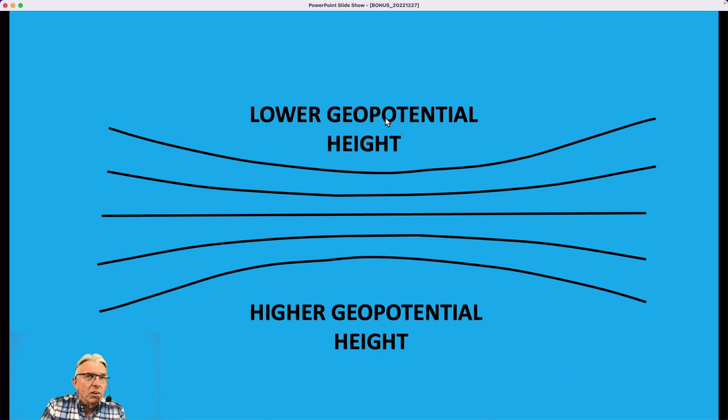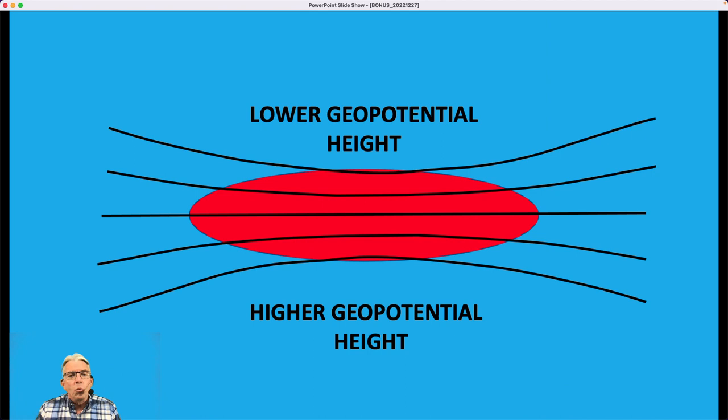So, because you don't have to go up as high up here to reach a given pressure, these are lower geopotential heights. And down here, you have to go up higher, and so it's higher geopotential height. You with me so far? So, where those lines are most tightly packed together is where the winds are blowing the strongest, and we're going to call that a jet streak.